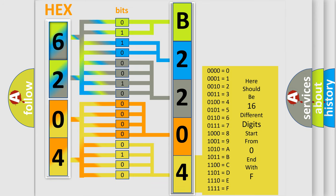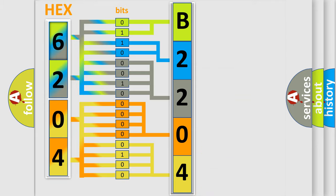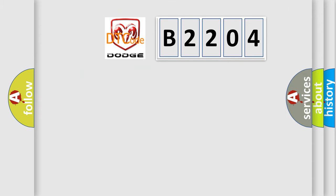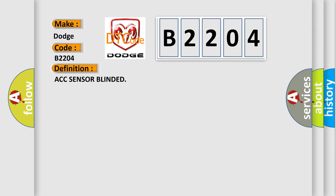We now know in what way the diagnostic tool translates the received information into a more comprehensible format. The number itself does not make sense to us if we cannot assign information about what it actually expresses. So, what does the diagnostic trouble code B2204 interpret specifically? Dodge — car manufacturers. The basic definition is: ACC sensor-blinded.